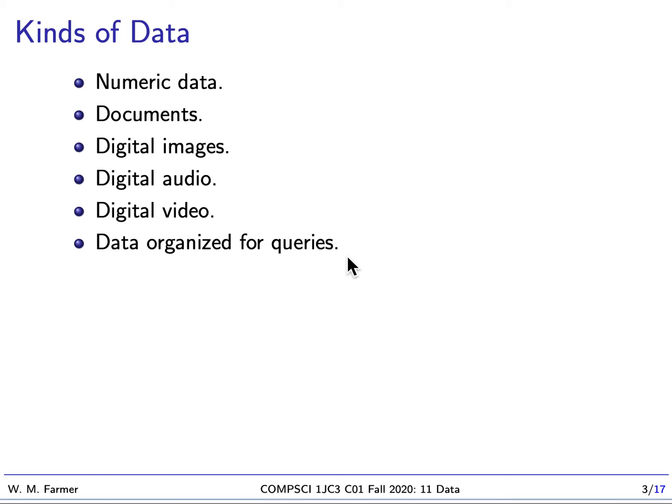There are various kinds of data: numerical data, documents, digital images, digital audio, digital video, and data that's been organized for queries. This is the kind of data you find in databases. Now we've talked a lot about numerical data and I think you've probably had a fair amount of experience with documents. So we're going to focus on the other kinds of data.